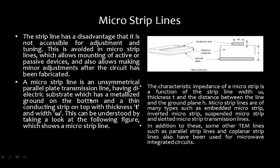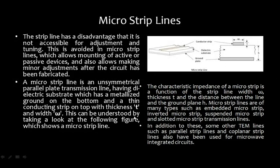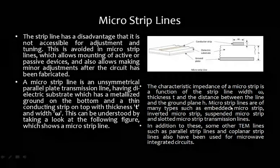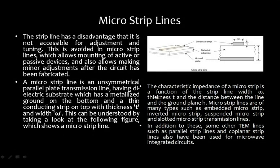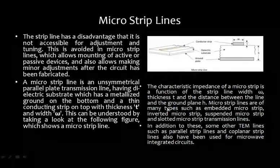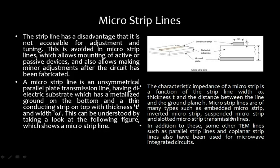The microstrip has a metallized ground on the bottom and a thin conducting strip on top with thickness T and width W. The characteristic impedance is a function of strip width W, thickness T, and height H. Microstrip line types include embedded microstrip, inverted microstrip, suspended microstrip, and slotted microstrip transmission lines.